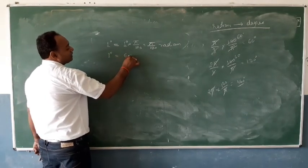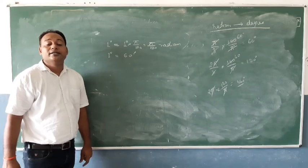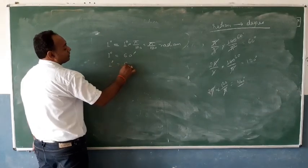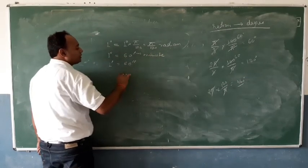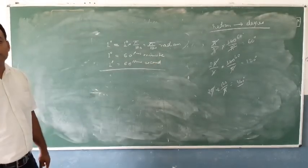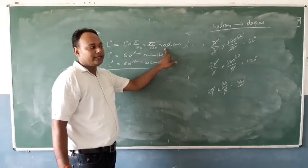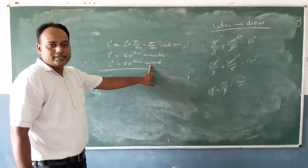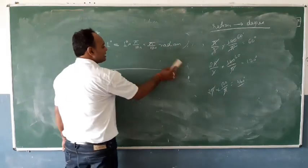Also note that 1 degree is equal to 60 minutes, and 1 minute is equal to 60 seconds. Therefore, 1 degree is equal to 3600 seconds.